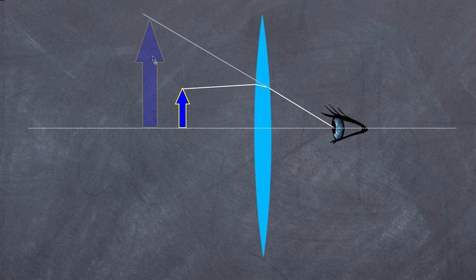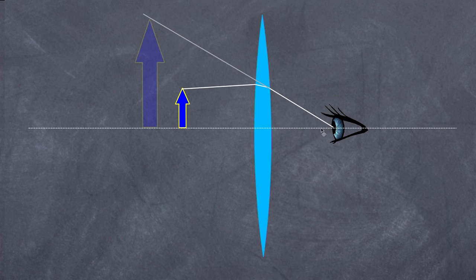What determines how big the virtual image is? It's determined by the size of the object, but also importantly the features of the lens: the refractive index of the material, the curvature, and the focal length. The position of the object in relation to the lens also affects the size — that's why when you move a lens up and down, the magnification changes.